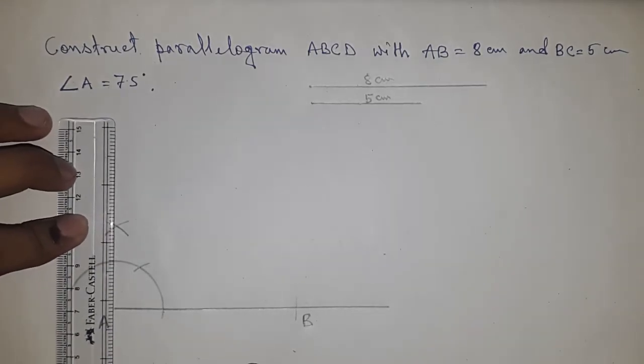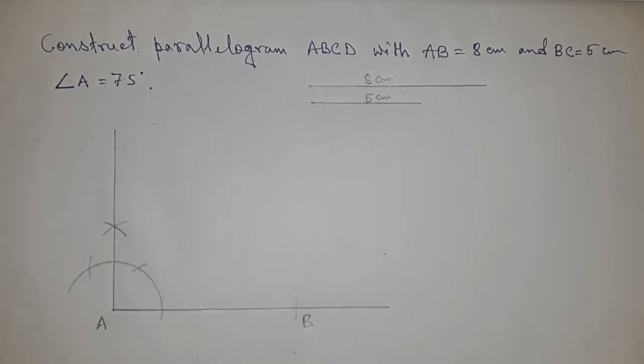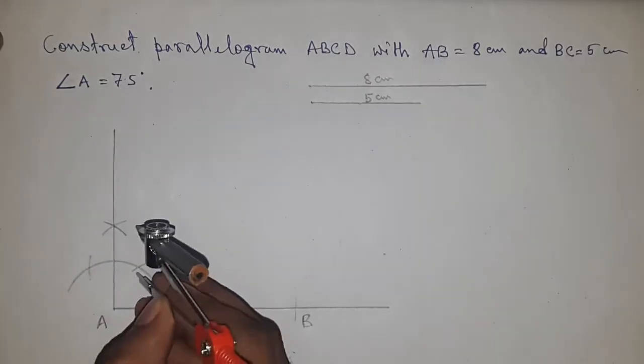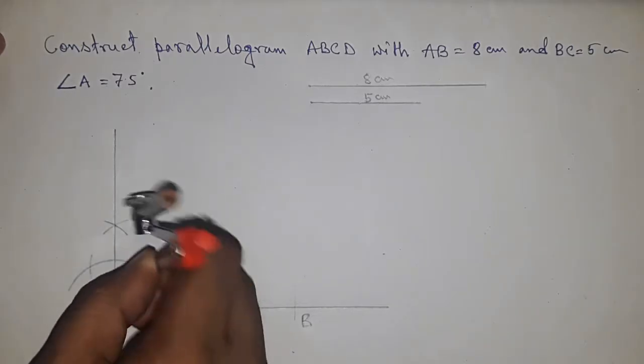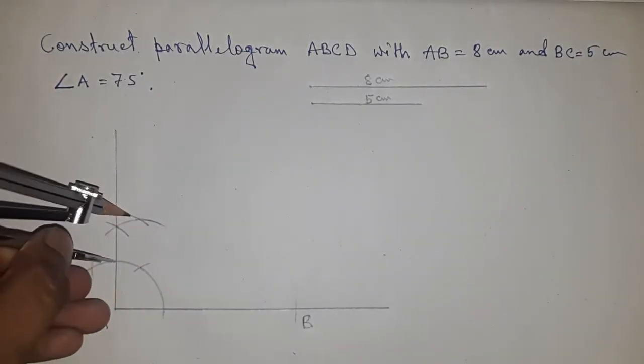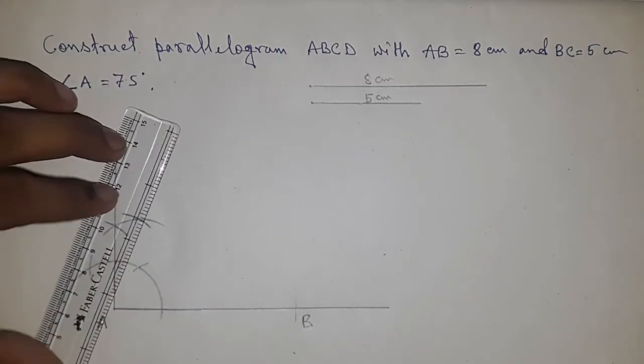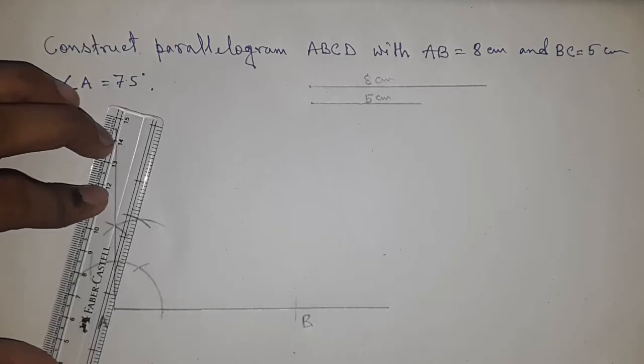Taking any radius and putting the compass here and cut the arc, so now joining this. We got 75 degree angle.